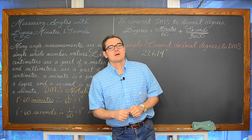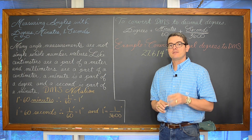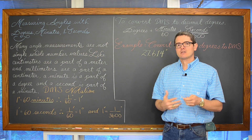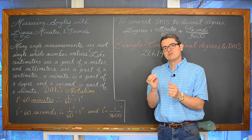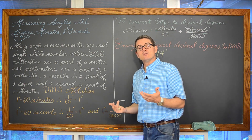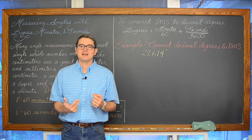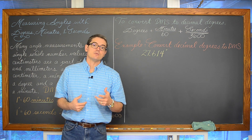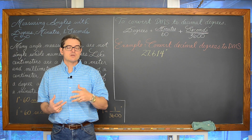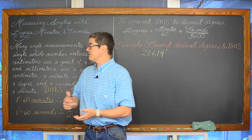Mr. Tarrou. In this math lesson we are going to be looking at four examples dealing with angle measures that are in the unit of measure of degrees, minutes, and seconds. Minutes and seconds are a part of a subdivision of a degree, like a decimal. Most of the work with angles in our trig book are going to have these angles measured in what is called a decimal degree, but there will be a few occasionally through the book that are in a different unit of measure with this DMS notation.